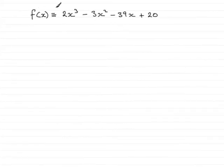Now, in this question we're given that f(x) is identical to 2x³ - 3x² - 39x + 20.